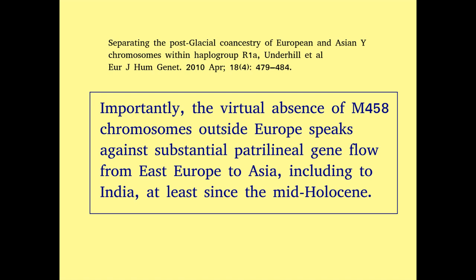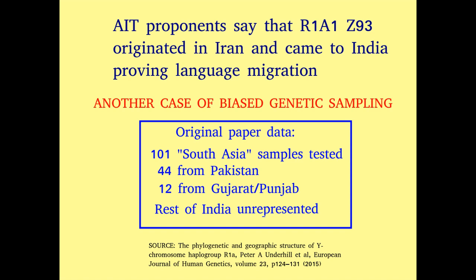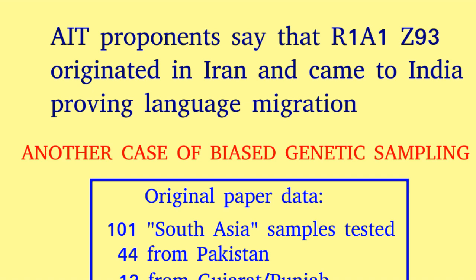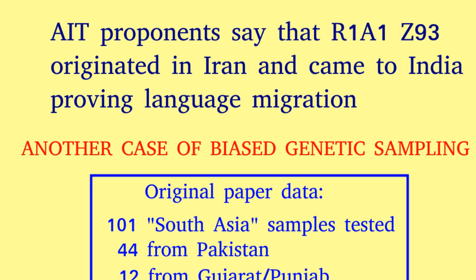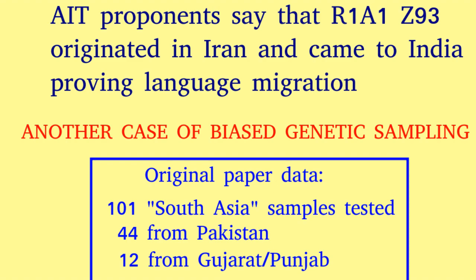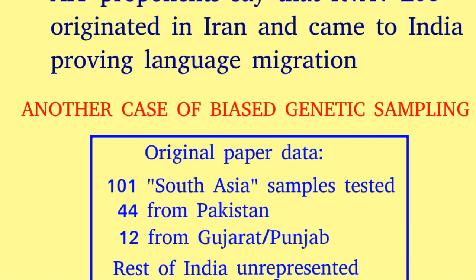After this, one more paper caused celebration for those who want the Aryan myth to become true. One study suggested that a fragment of R1a found in India, called Z93, originated in Iran, suggesting that men from Iran came to India. However, the joy was short-lived. The selection of samples for the study was grossly biased. Of the 101 so-called South Asian samples, 44 were Pakistanis and 12 more were from Punjab or Gujarat, leaving out samples of the majority of Indians from the vast Indian subcontinent.